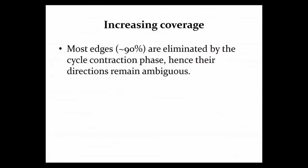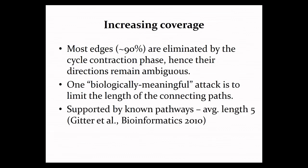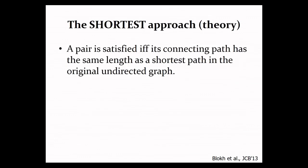And again, here biology comes to the rescue with the realization that real biological pathways are not simply arbitrary paths in the network. They tend to be relatively short. And this is also supported by statistics from known pathways in curated databases. So this gives rise to a new variant of the problem, which we call the shortest, in which we say that the pair is satisfied if and only if it has a directed path whose length is the shortest possible. So the length of this path should be the length of the shortest path in the original undirected network.